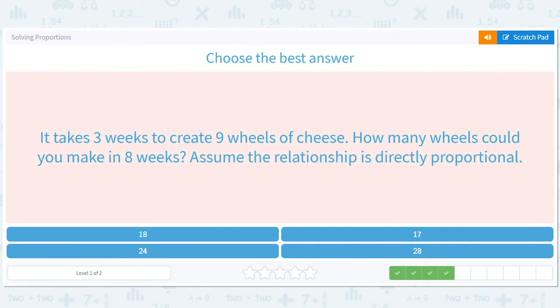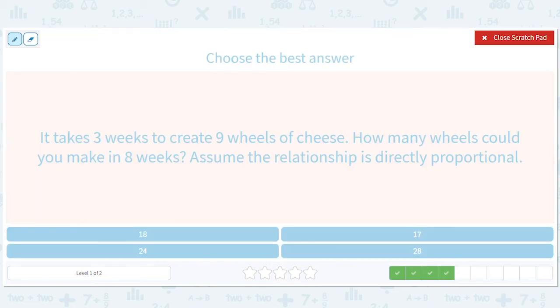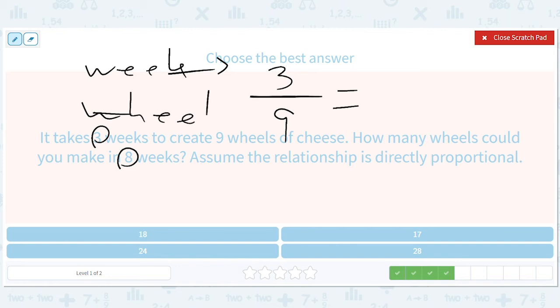It takes three weeks to create nine wheels of cheese. How many wheels could you make in eight weeks? Again, this is a great one for an equation because three and eight, they don't go well together. That's exactly when you know you need an equation. So three weeks, nine wheels. You got to keep track of what's on top. So this is weeks. This is wheels.